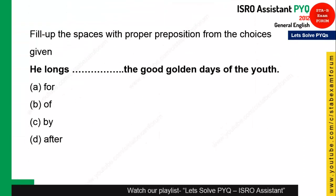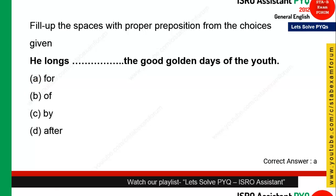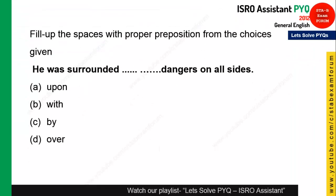A very simple one: 'He longs ___ the good golden days of his youth.' He longs for the golden days of his youth — the correct preposition is 'for'. Option A is the right answer.